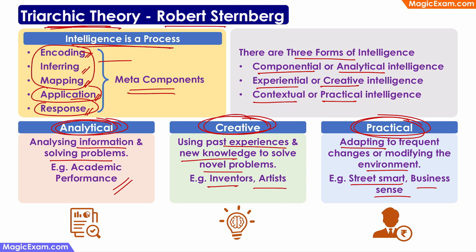So: learning, identifying the problem, and solving the problem. These five meta-components can be combined into the three steps learned earlier. In any case, for Triarchic Theory, remember it has three types of intelligence: Analytical, Creative, and Practical.